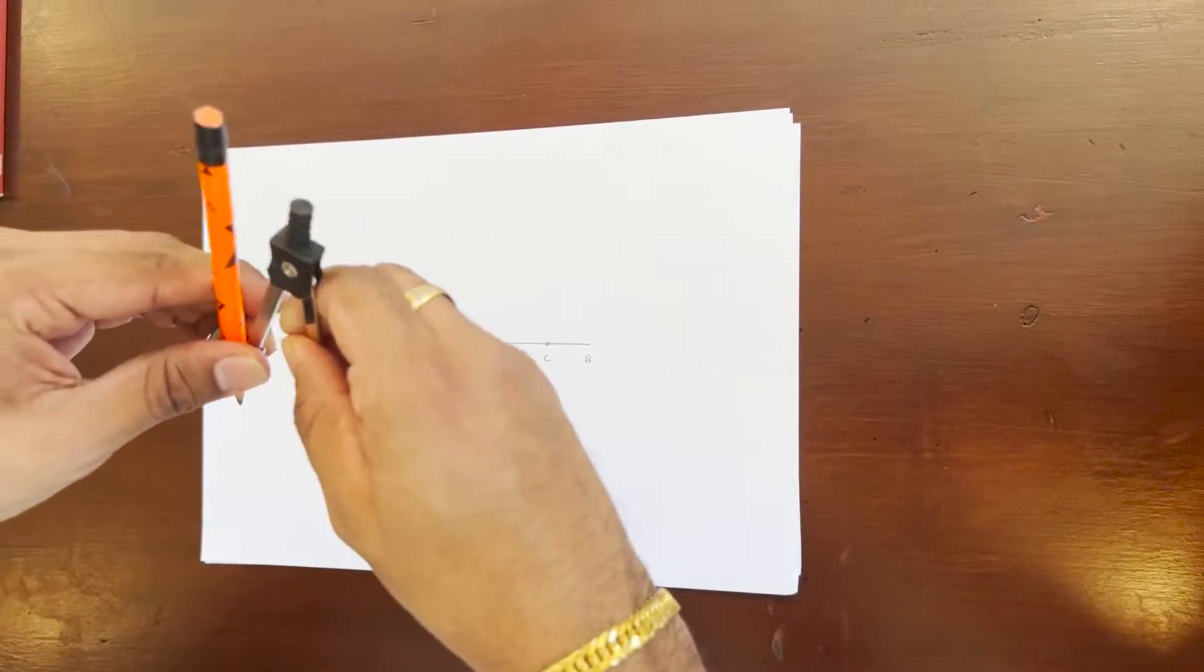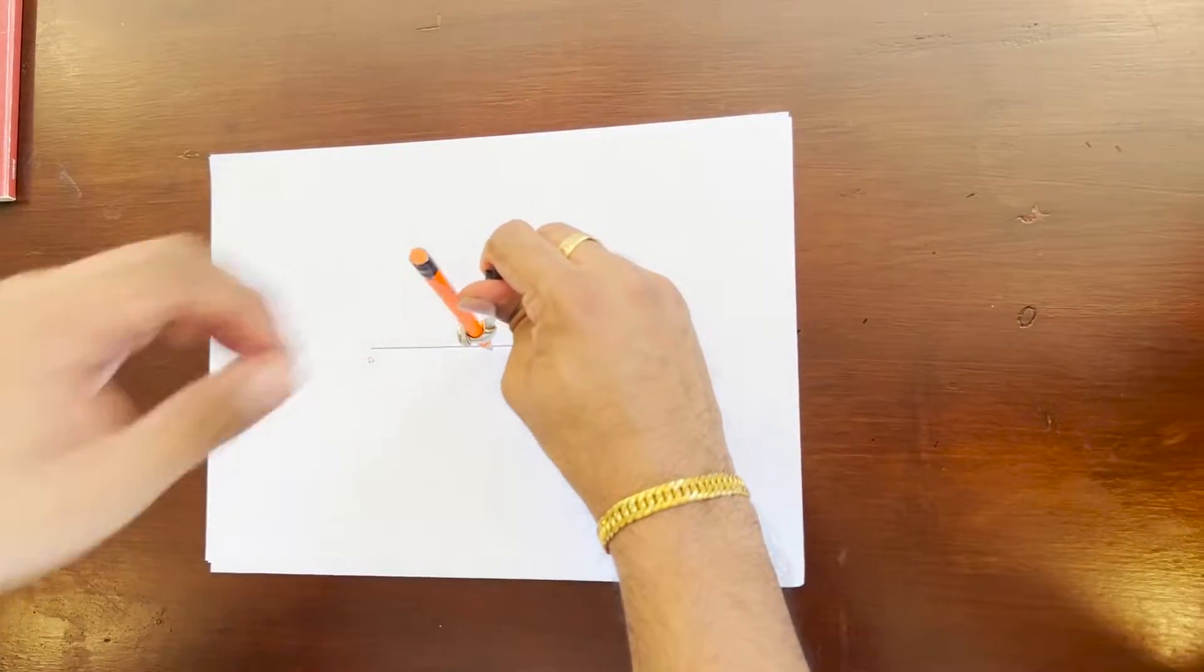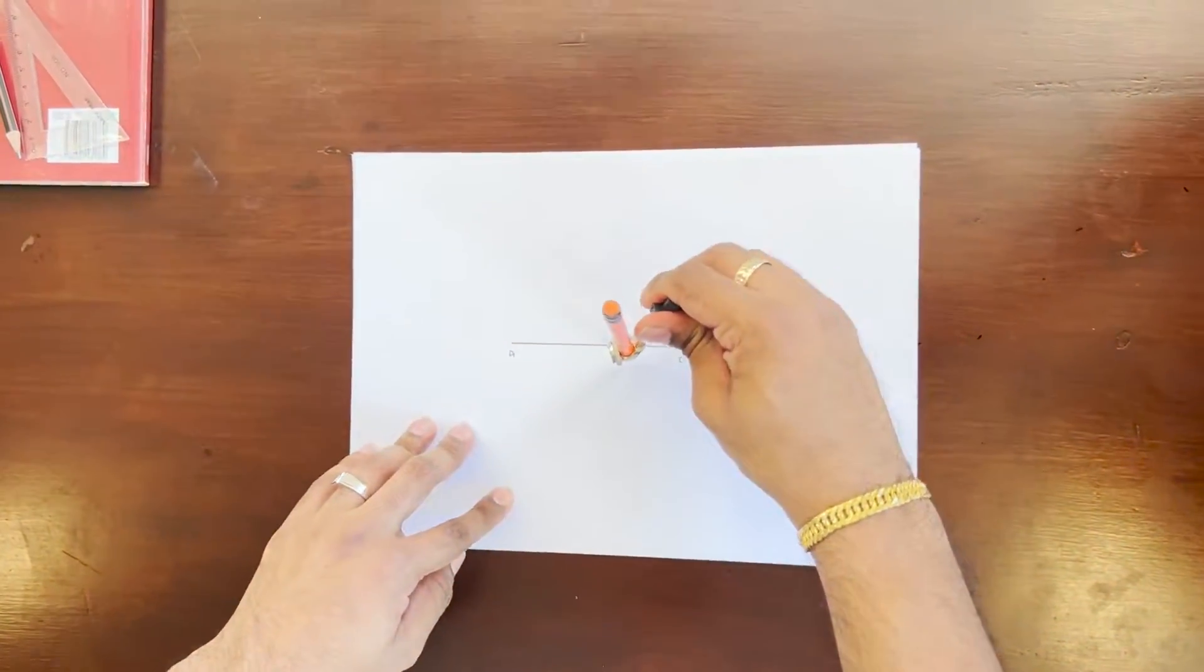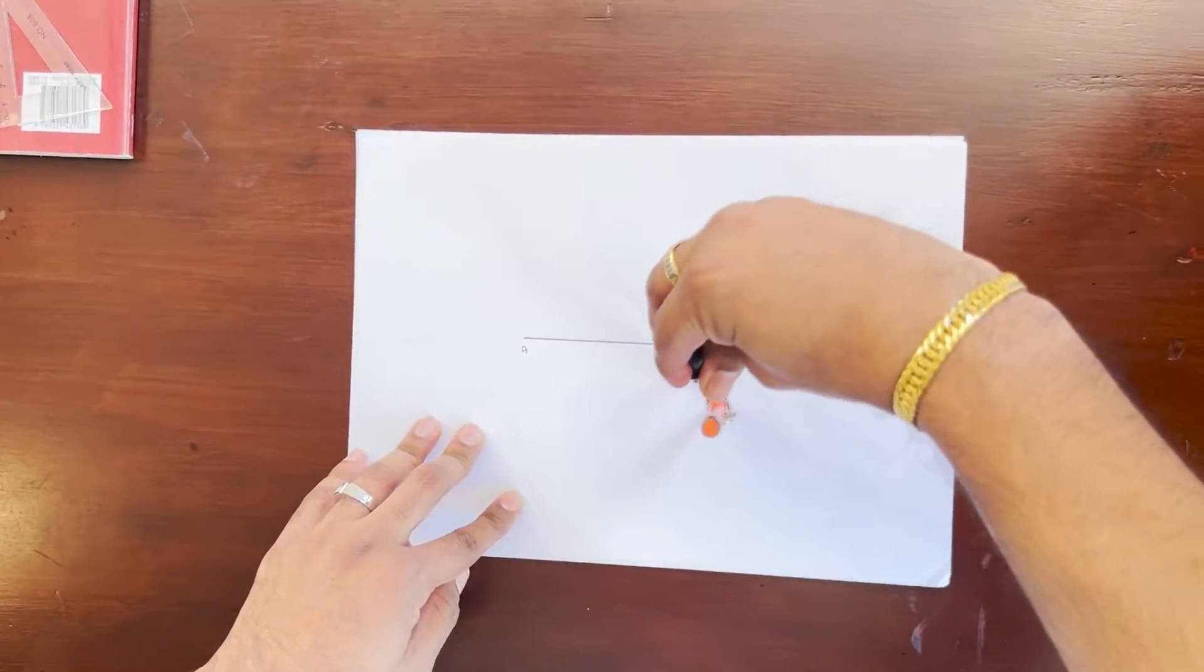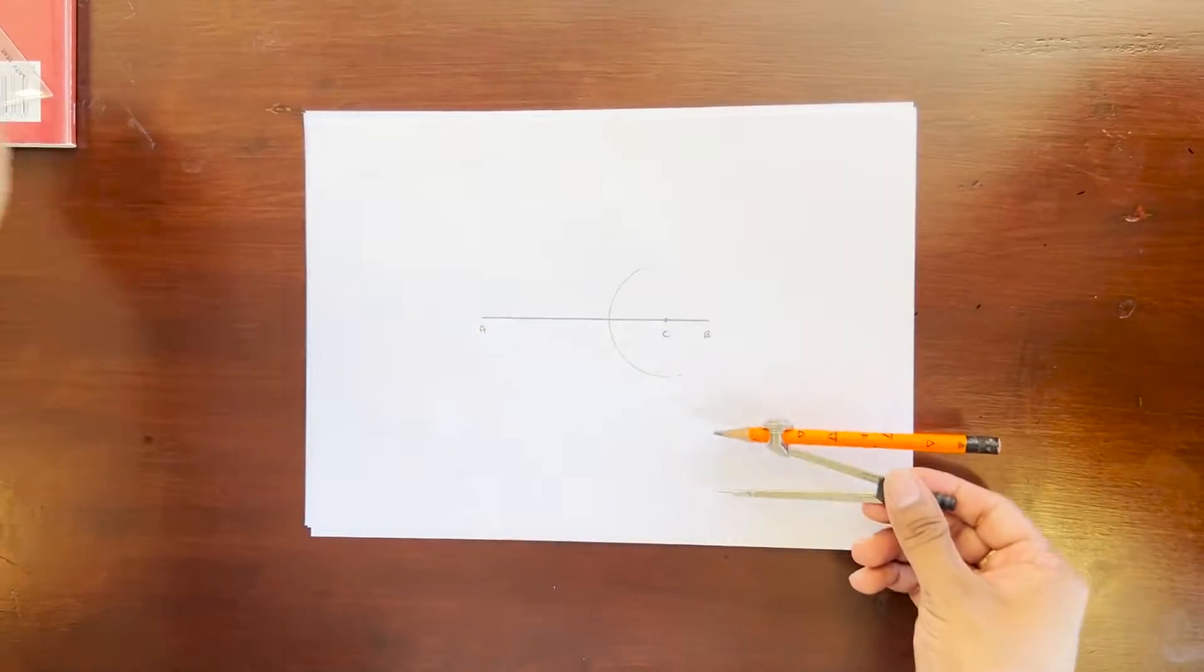Now I'm going to take this compass, point it at point C, and I'm going to choose the radius as much as I want. But once you choose it, do not change it. Keeping it at point C, I'm going to draw an arc right here.